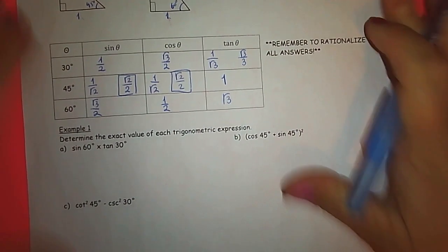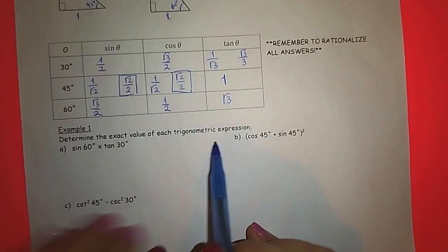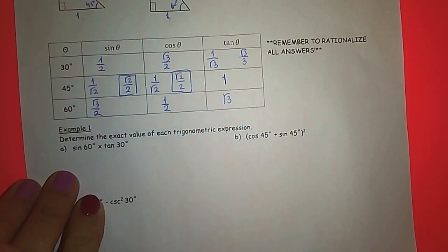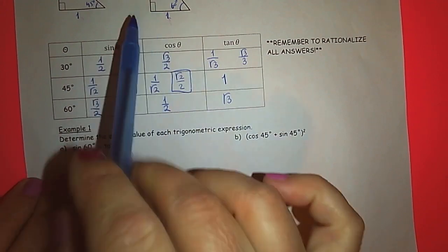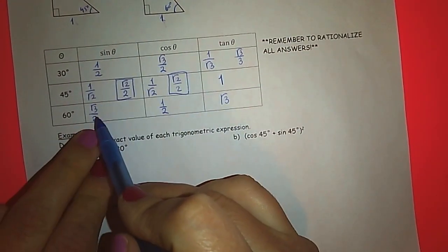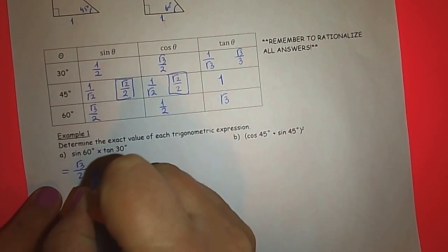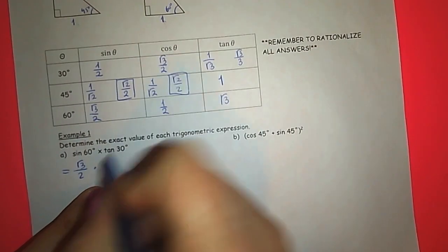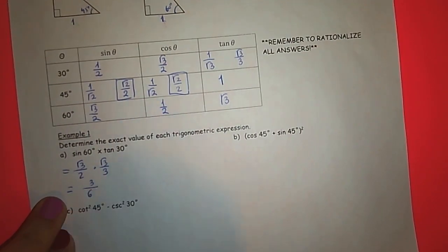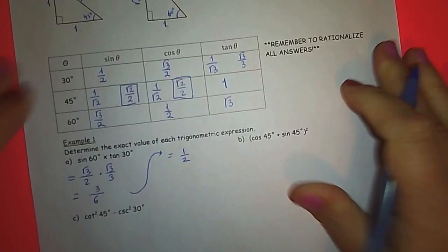Let's look at some examples. Determine the exact value of each trigonometric expression. First, sine 60 — we can use the table. In a regular classroom environment, you would be asked to memorize these because in advanced functions you will keep using the exact trigonometric ratios for those special angles. I definitely recommend memorizing these values. So sine 60 is root 3 over 2, times tangent 30, which is root 3 over 3. Root 3 times root 3 gives you 3, and we have 2 times 3 equals 6 on the bottom, so we end up with 3 over 6, which simplifies to one over two.